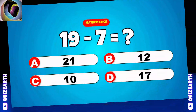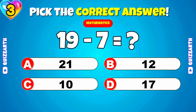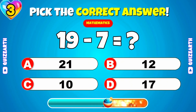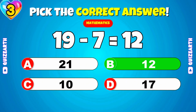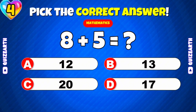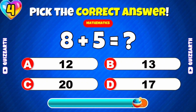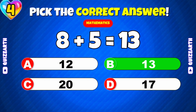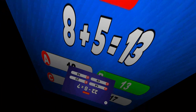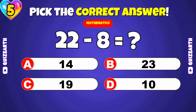8. What is 19 minus 7? 12. What is 8 plus 5? 13. What is 22 minus 8?